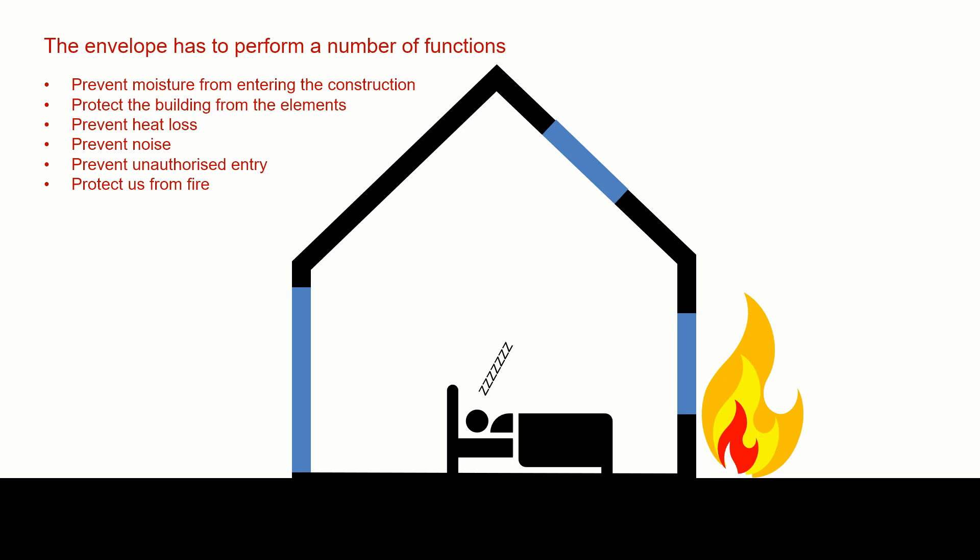Highlighted by recent events, fire is a significant issue. We have to consider how we design the building envelope to protect our properties and ourselves from the spread of fire. Combustion passing from one house to the next is an issue, so we have to think about how combustible the materials on the outside of the wall are. We also have to think about how we design the voids within walls so that fire from one part of a house cannot pass to another. In later lectures, we'll be looking at fire stopping to prevent that.